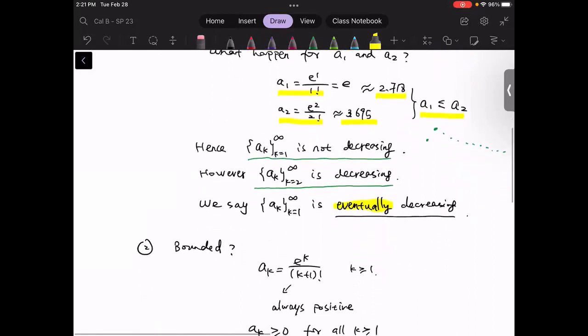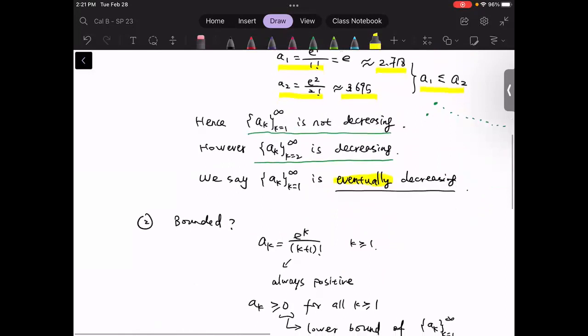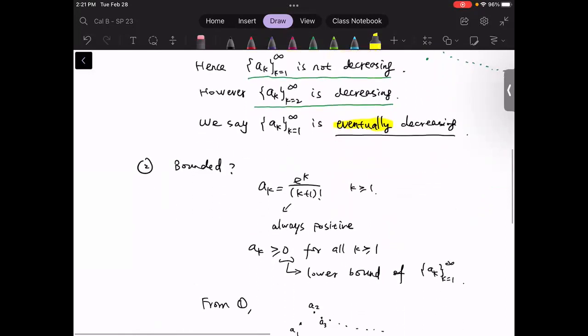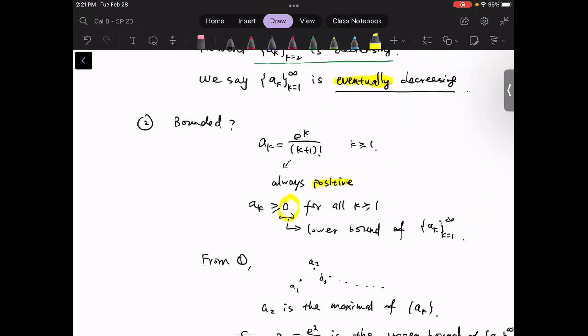The second would be the boundedness. Notice that the a_k is always positive. So we can easily find out a lower bound, zero. What about the upper bound? Now, from part one,